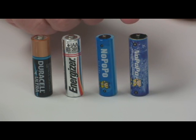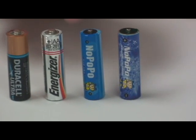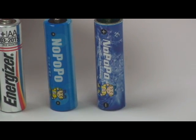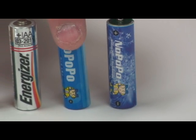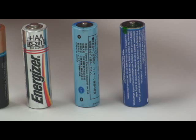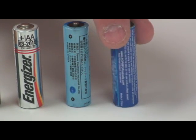As you look at the NoPoPo batteries on the right, you will notice that they look very similar. They are absolutely identical in every way with the exception of the outside covering. The reason is the one on the left has Japanese writing for the Japanese market, and on the right has English writing for the US market.